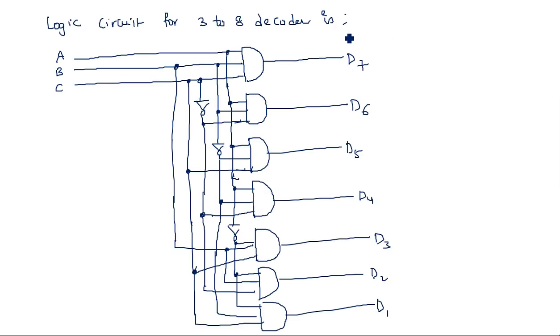The 3-to-8 decoder is the most commonly preferred decoder because from the same design we can build higher order decoders. Thank you.